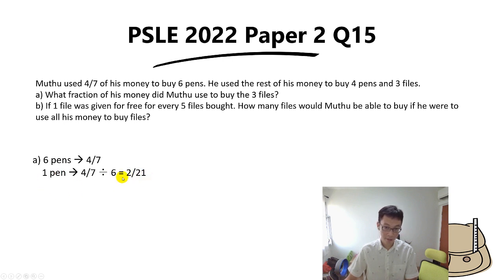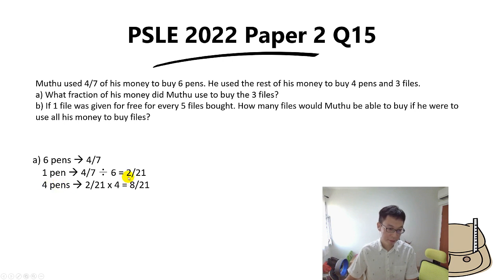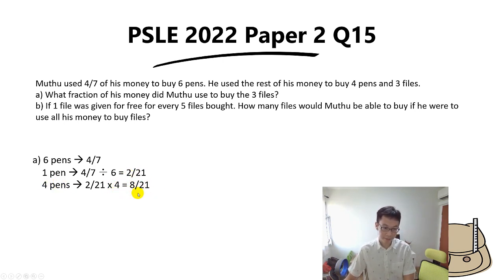Now, the question says four pens and three files cost the rest of the money. Let's find the fraction for four pens: 2/21 times 4 gives us 8/21. That's the fraction for four pens.